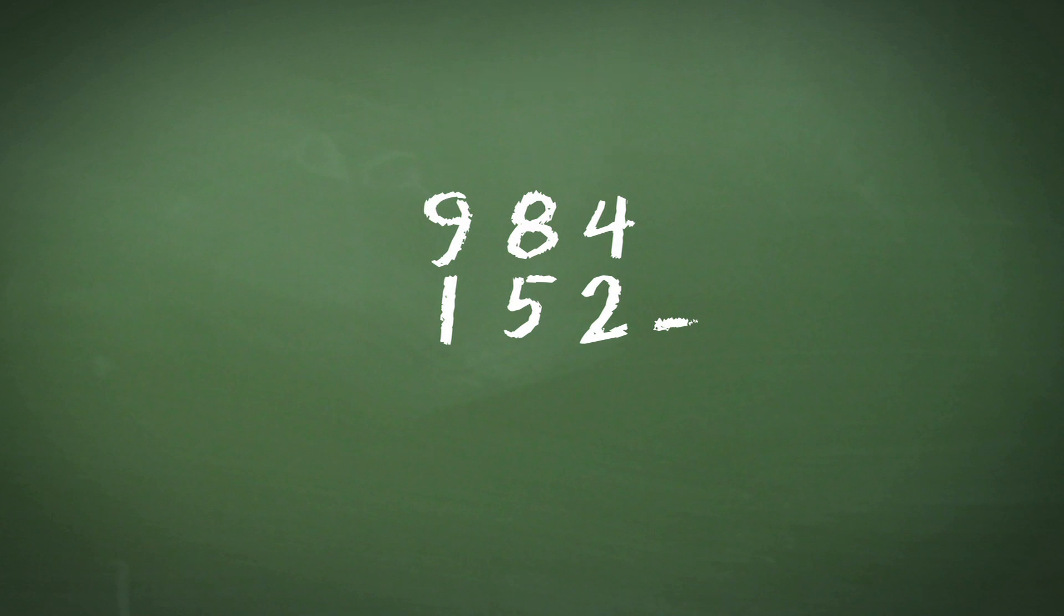Once we have written it out, we then simply go through each column starting with the units on the right and subtract them. So 4 minus 2 is 2, 8 minus 5 is 3, and 9 minus 1 is 8, so we get the answer of 832.